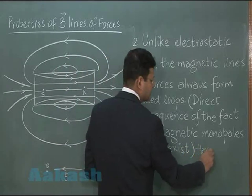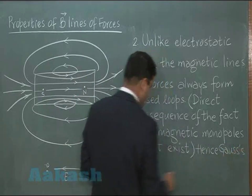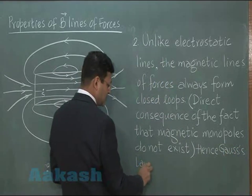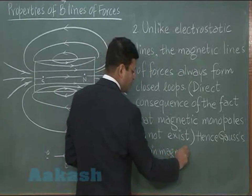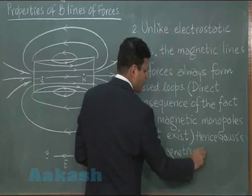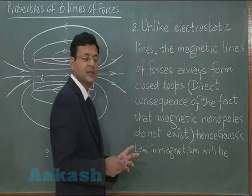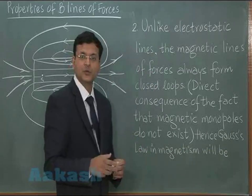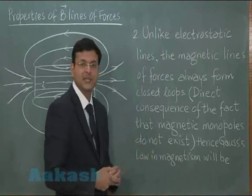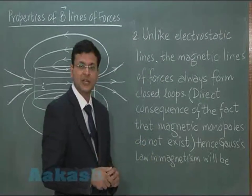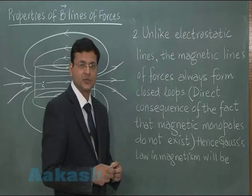And if you try to express these things in terms of Gauss's law in magnetism, to write Gauss's law in magnetism you should recapitulate how you wrote Gauss's law in electrostatics. In electrostatics you wrote: ∮ E · dS = (1/ε₀) × net charge enclosed.